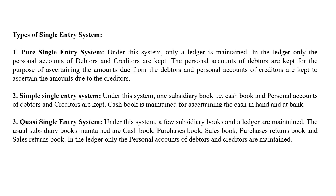In comparison: pure single entry system has only personal accounts of debtors and creditors. In the simple single entry system, along with debtors and creditors accounts, a subsidiary book called the cash book is also maintained.